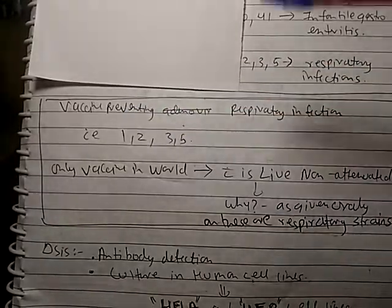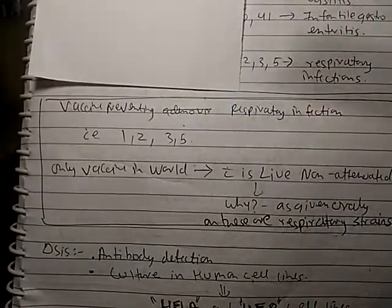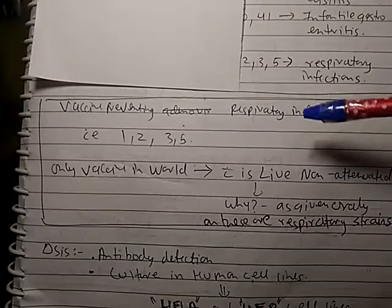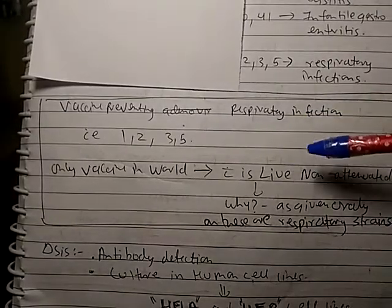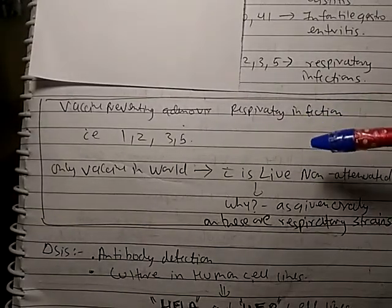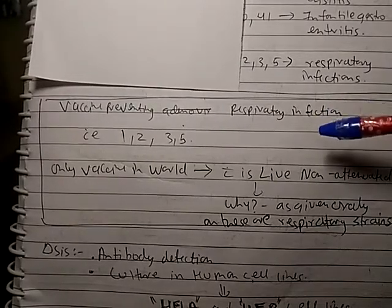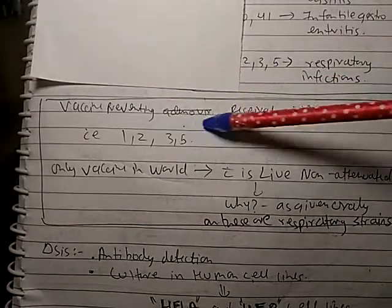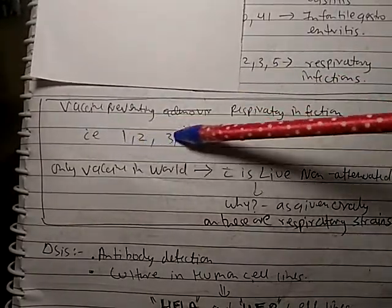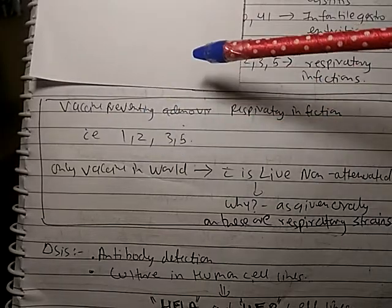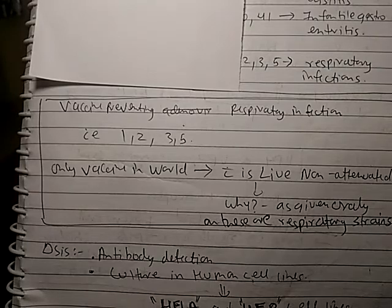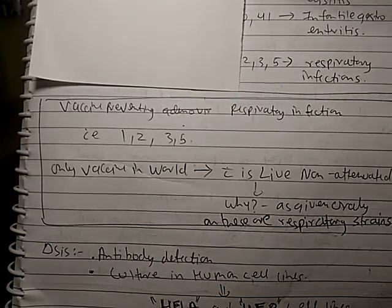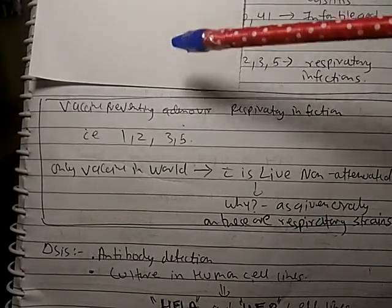The vaccine preventing respiratory infections contains serotypes 1, 2, 3, and 5. This is the only vaccine in the world which is live but non-attenuated. It is non-attenuated because these strains are given orally, and we know they have a propensity for respiratory tissue and not the GIT — so they are not virulent in the GIT.